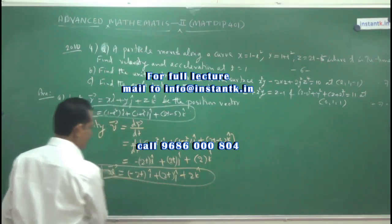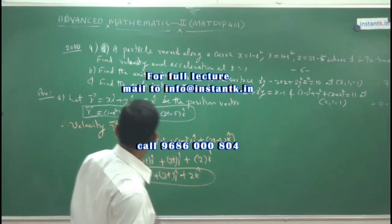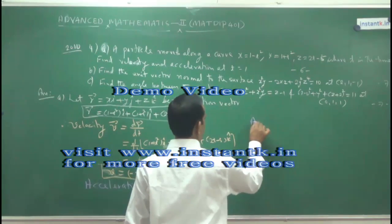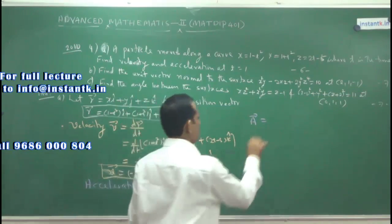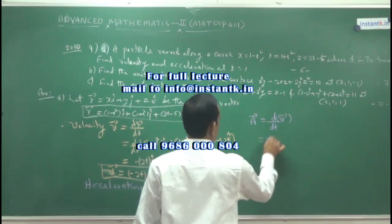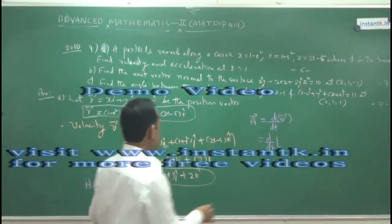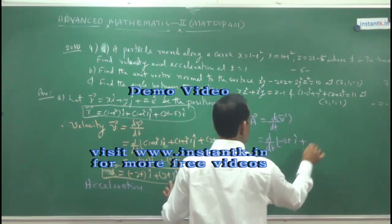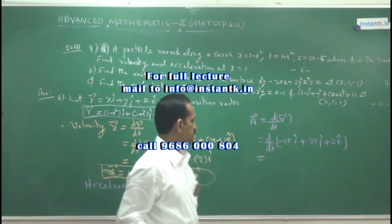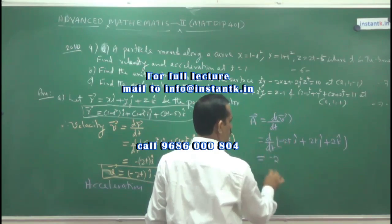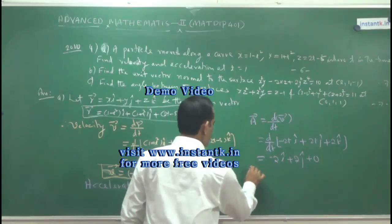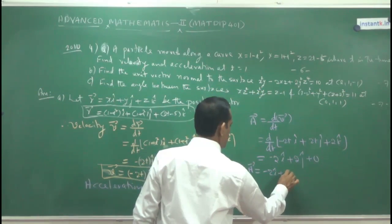Next, find the acceleration by differentiating velocity again. Acceleration vector a = dv/dt. V = -2t·î + 2t·ĵ + 2k̂. Differentiate: derivative of -2t is -2, so -2î; derivative of 2t is 2, so +2ĵ; derivative of 2 (constant) is 0, so the k̂ term vanishes. Therefore, acceleration = -2î + 2ĵ.